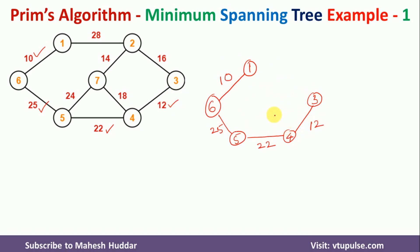Again we find the neighbors. Considering all remaining neighbors: node 1 to node 2 is 28, node 5's remaining neighbor is 24, node 4's remaining neighbor is 18, and node 3's neighbor gives weight 16, which is the smallest. So we draw an edge from node 3 to node 2 with weight 16.